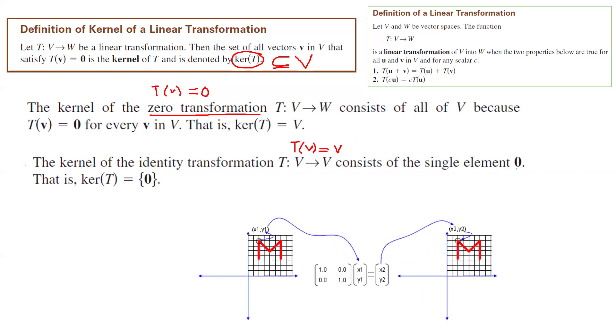Again, remember that for identity transformation it takes the vector, it takes the object, and then it gives you the same object back. T(v) is equal to v. It's very similar to identity function. So the kernel of identity function or the identity transformation is a single element: zero.